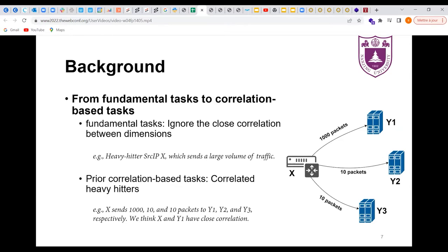To reveal the correlation between dimensions, there are some prior works like finding correlated heavy hitters. For instance, X sends 1000, 10, and 10 packets to Y1, Y2, and Y3, respectively. We think X and Y1 have close correlation.